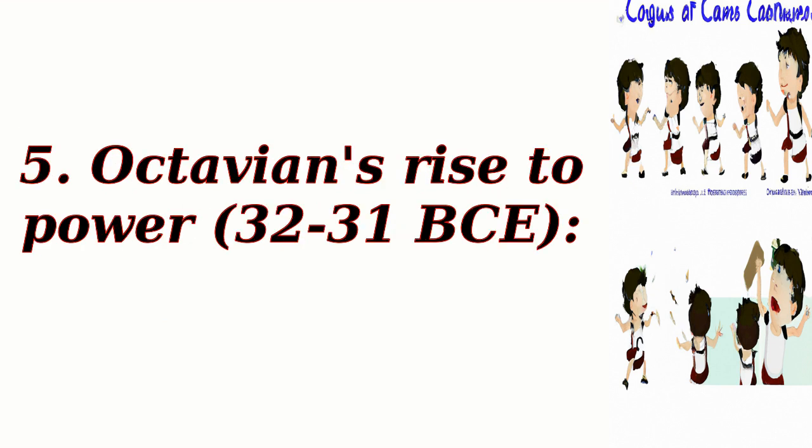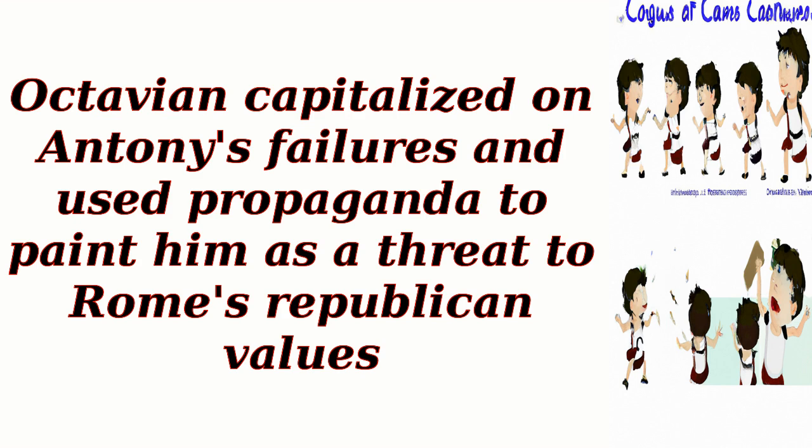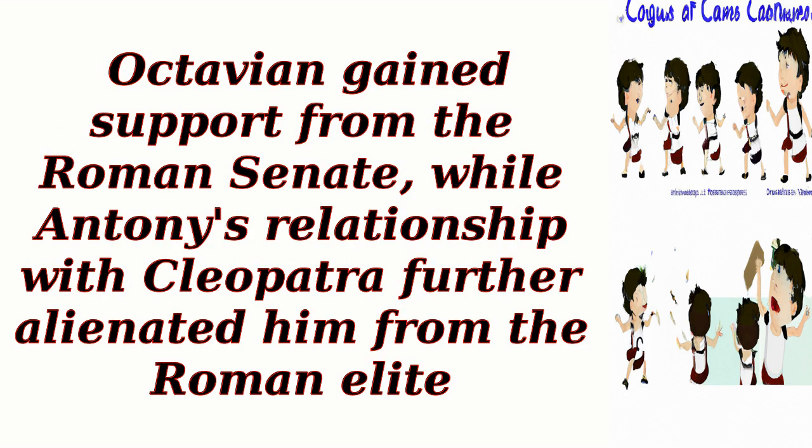5. Octavian's rise to power, 32 to 31 BCE. Octavian capitalized on Antony's failures and used propaganda to paint him as a threat to Rome's republican values. Octavian gained support from the Roman Senate, while Antony's relationship with Cleopatra further alienated him from the Roman elite.